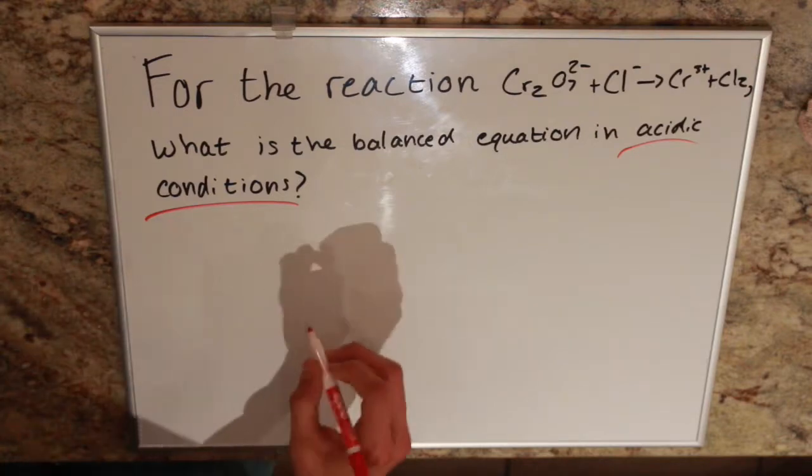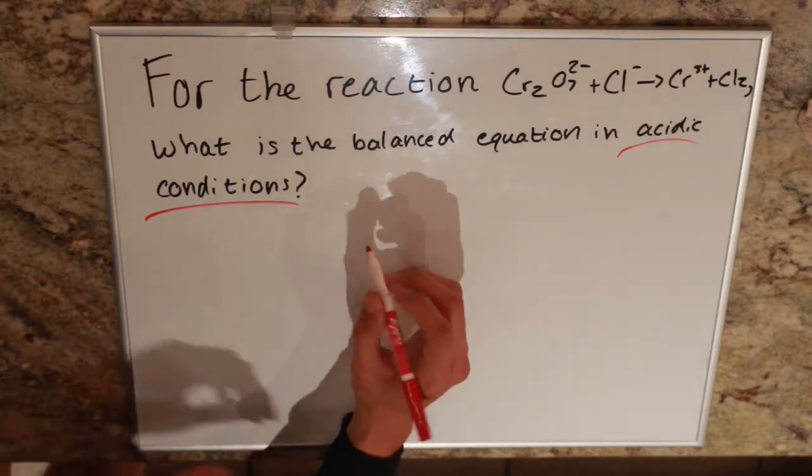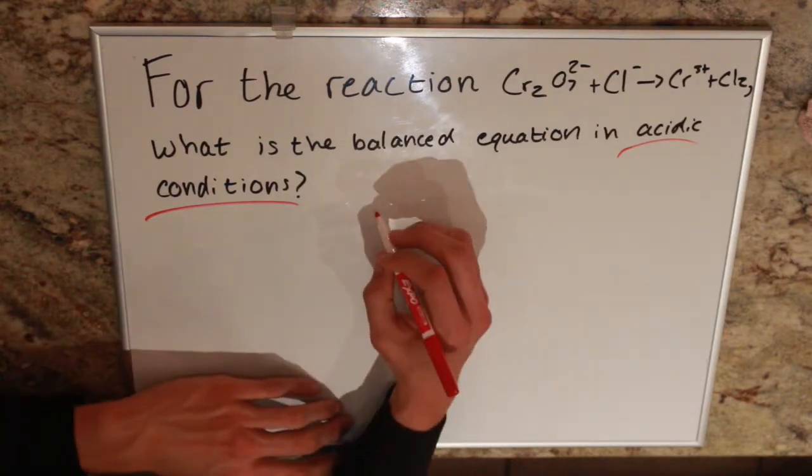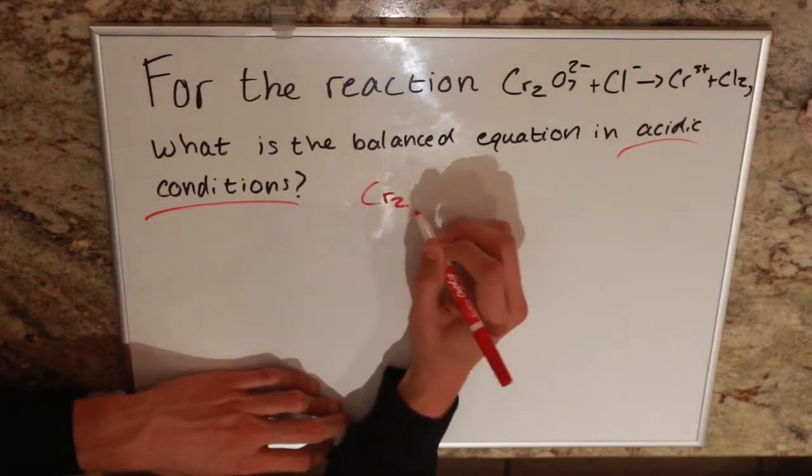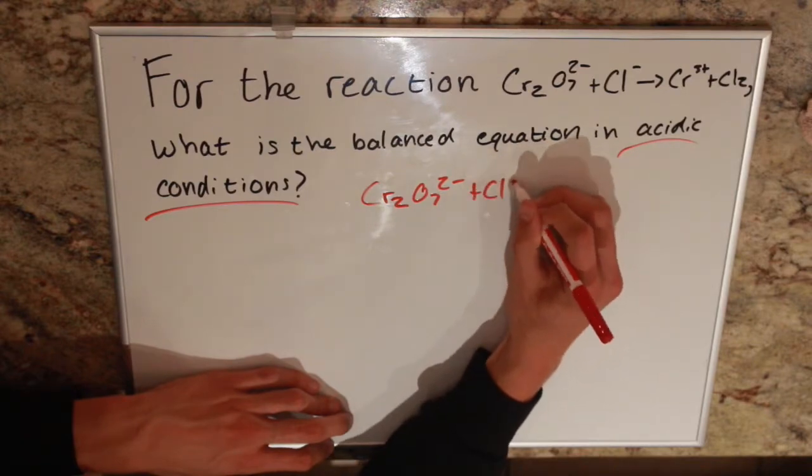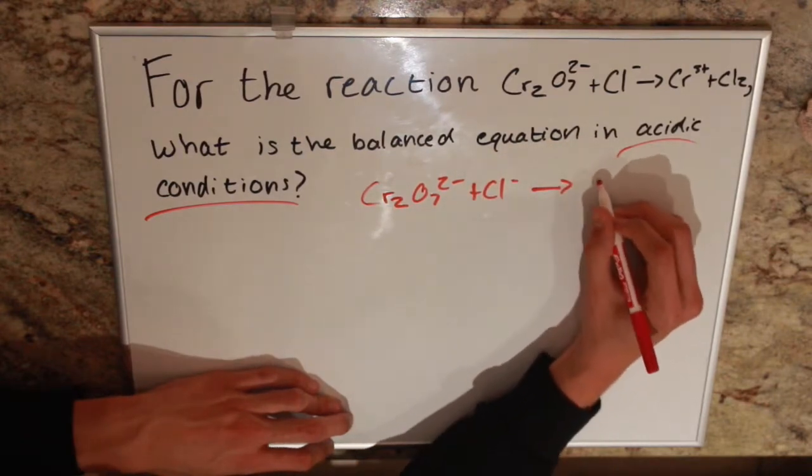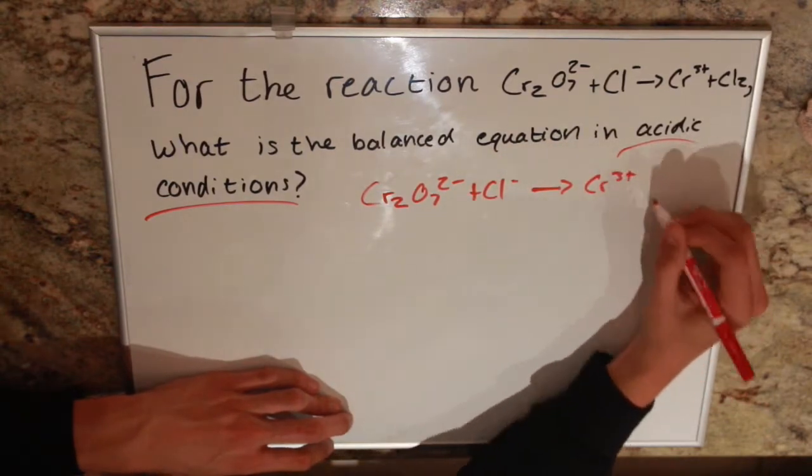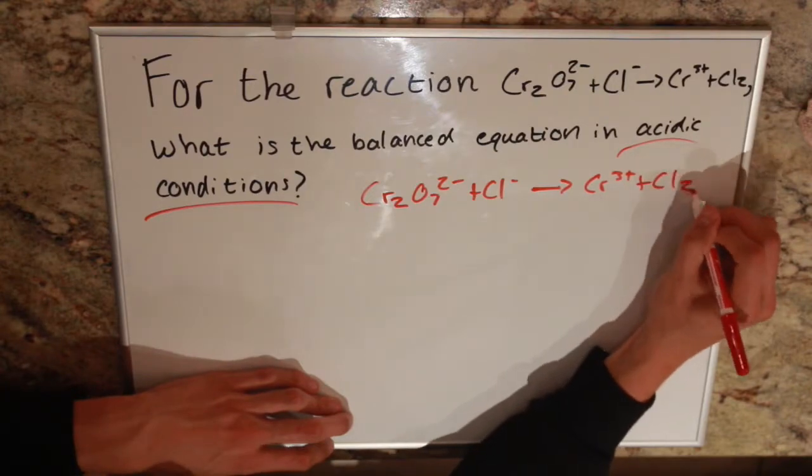So our first step is going to be to write out our equation from the problem. So we have Cr2O7 2- plus Cl- gives us Cr3+ plus Cl2.